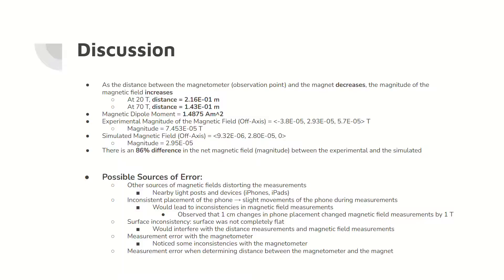Furthermore, the magnetic dipole moment was determined to be 1.49 times 10 to the negative 5 amperes meters squared. There is also an 86% difference between the magnitude of the experimental magnetic field and the simulated magnetic field. This discrepancy could be due to a number of possible errors.